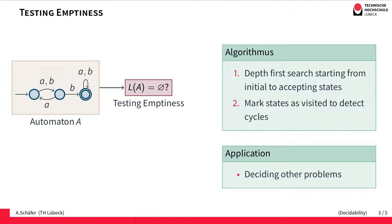And this can for example be done by doing a depth first search in the graph of the automaton. Here we have to of course mark the states we already visited to detect cycles.